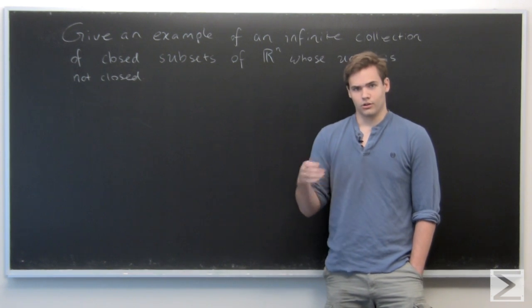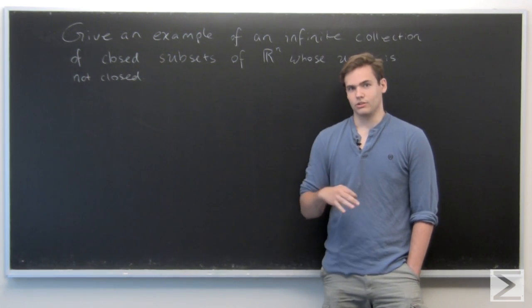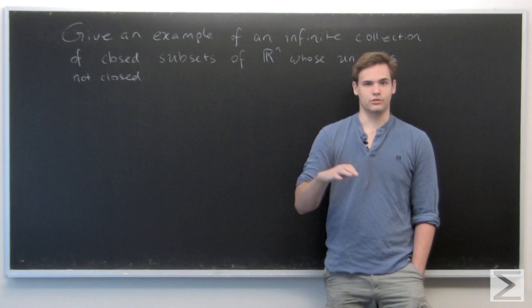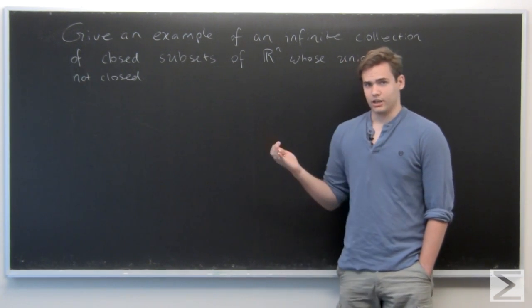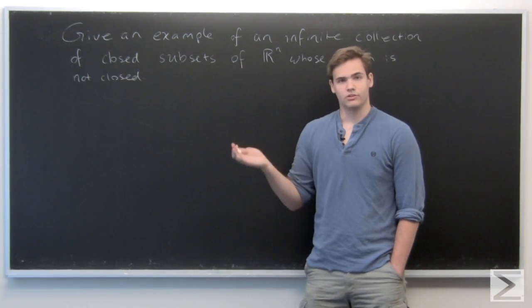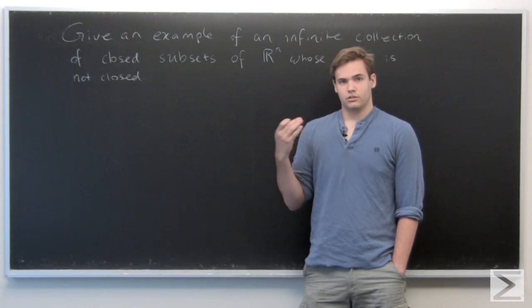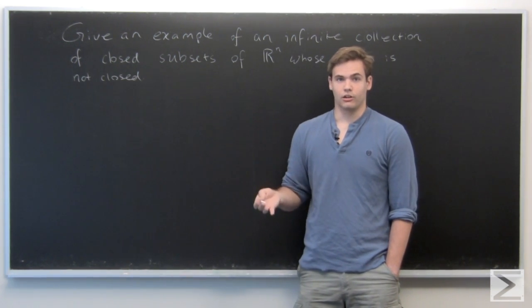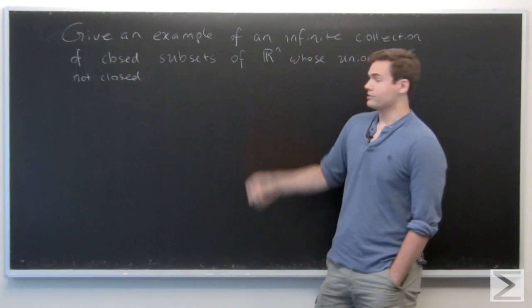And we kind of skirted over the idea of what happens when you take infinite unions of closed sets or intersections of open sets. And right now we want to give an example, or a counterexample, of when you can find an infinite union of closed sets that is not closed. And well, that's the problem at hand.